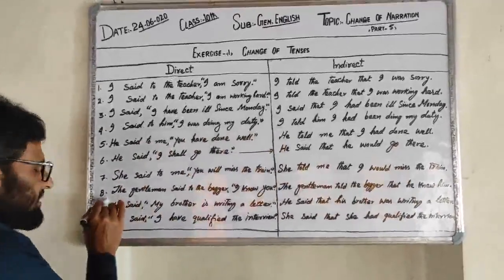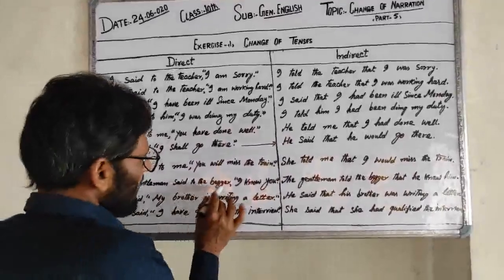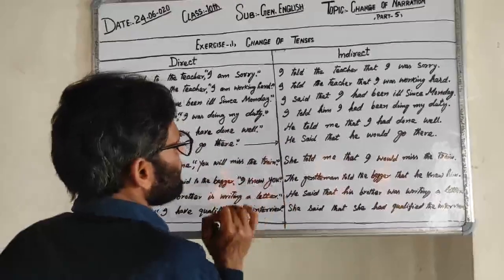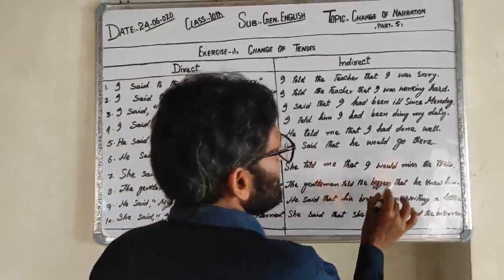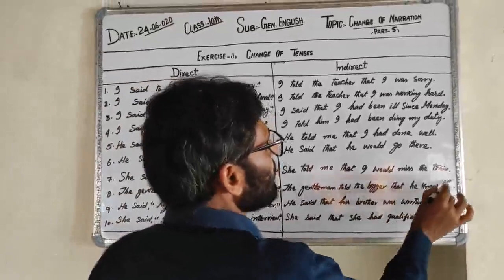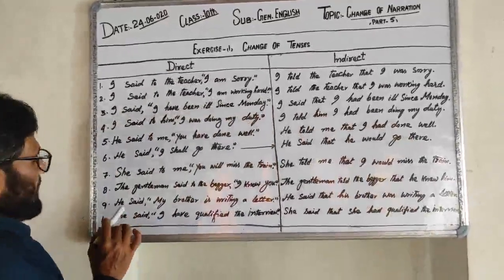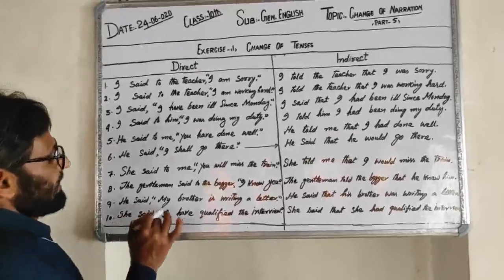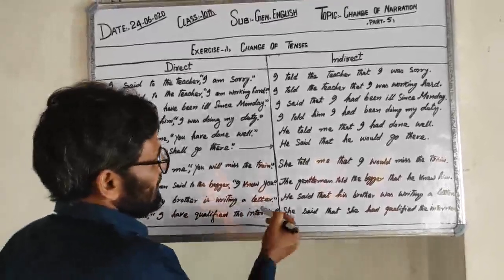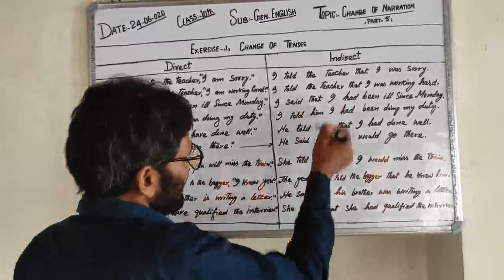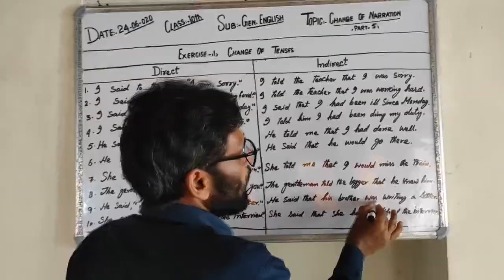Sentence 8: The gentleman said to the beggar I know you → The gentleman told the beggar that he knew him. Sentence 9: He said my brother is writing a letter → He said that his brother was writing a letter.